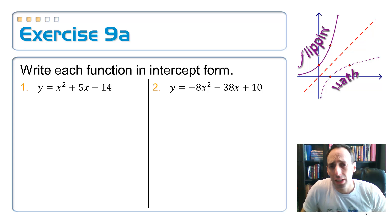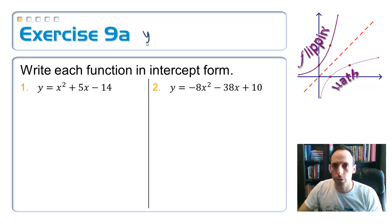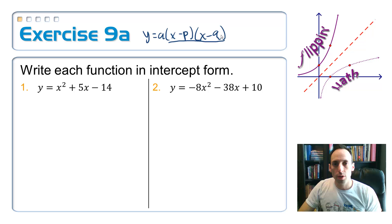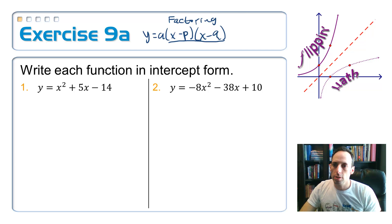Okay, so on this next set of equations, we're going to put them in intercept form. And unless I'm mistaken, intercept form goes like this. y equals a times x minus p times x minus q. And the stuff that's in parentheses here, we're going to get that by using an f-word on this. So, we're going to be factoring.